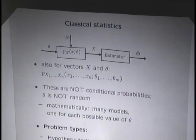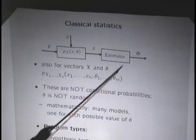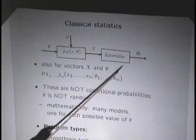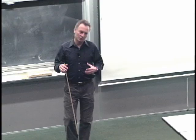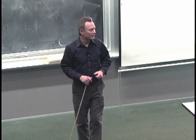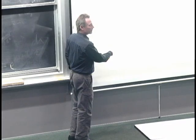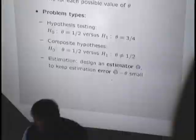The distribution of theta hat depends on the distribution of x. The distribution of x is affected by theta. So in the end, the distribution of your estimate theta hat will also be affected by whatever theta happens to be. Our general objective when designing estimators is that we want to get an estimation error which is not too large, but we'll have to make that specific — what exactly we mean by that.